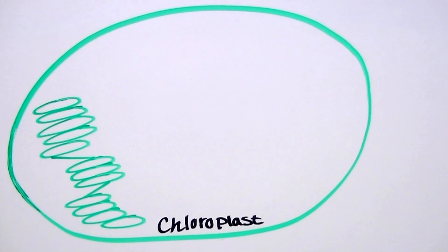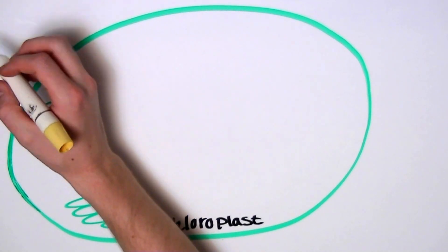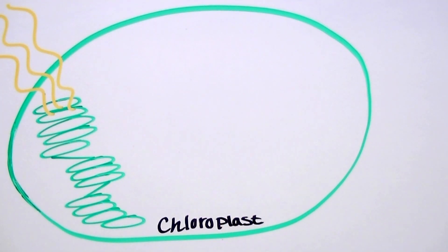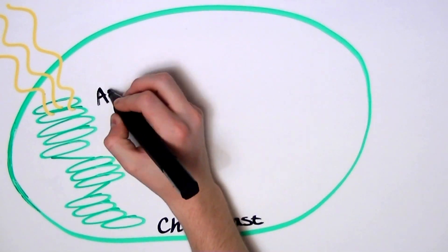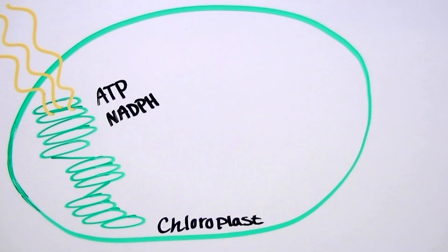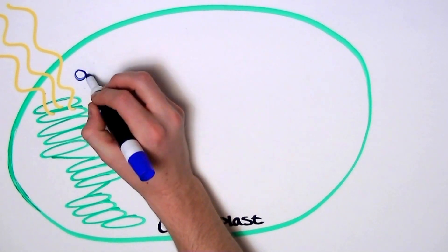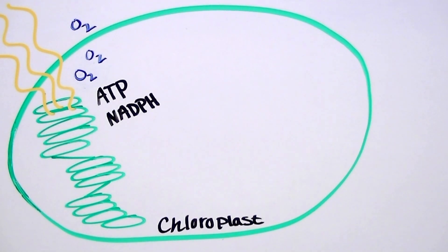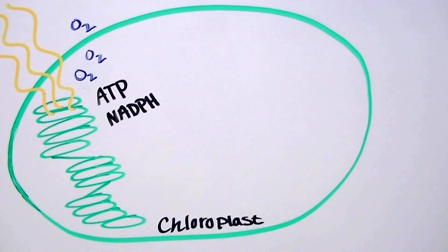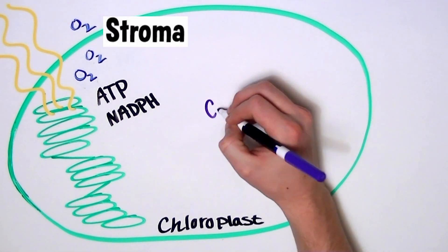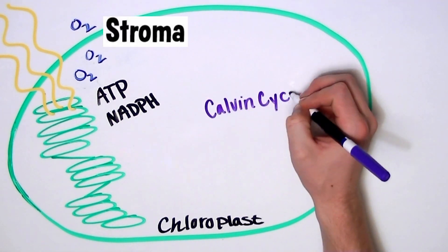Last time we talked about the first step in photosynthesis, the light reaction. This process uses light to make chemical energy in the form of ATP and NADPH. It's also responsible for splitting water, which generates oxygen. At the same time this is happening in the cell, these byproducts are released, free to travel within the stroma of the chloroplast, where the Calvin Cycle takes place.